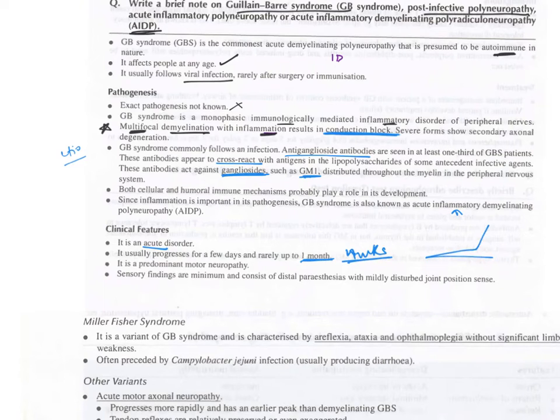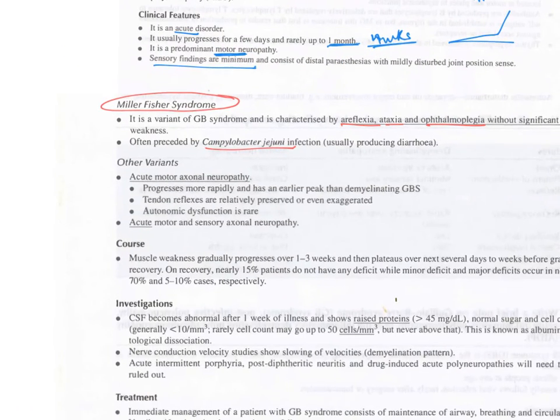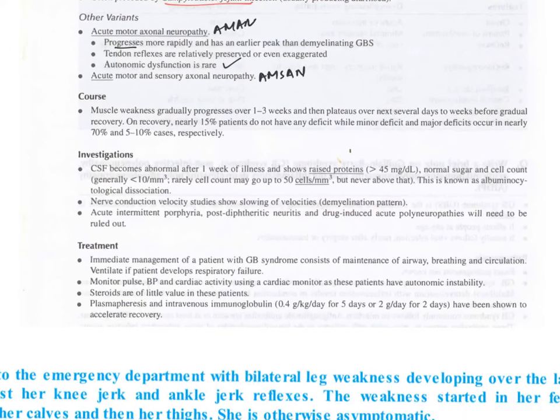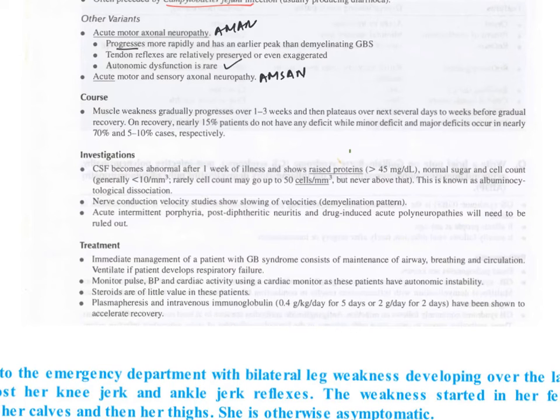Clinical features - it's an acute disorder progressing over a few days to one month or four weeks. Remember that graph. It is a predominant motor neuropathy, very important. Sensory findings are minimum. Consider Miller-Fischer syndrome with its triad: areflexia, ataxia, ophthalmoplegia without significant limb weakness, and Campylobacter jejuni infection. AMAN progresses rapidly, its prognosis is good, autonomic dysfunction is rare. AMSAN has poor prognosis. Regarding course, muscle weakness gradually progresses over 1 to 3 weeks, plateaus over the next several days, and recovery starts after 2 weeks. 70% of patients have minor problems, 5 to 10% have major issues, and 5 to 10% mortality rate.